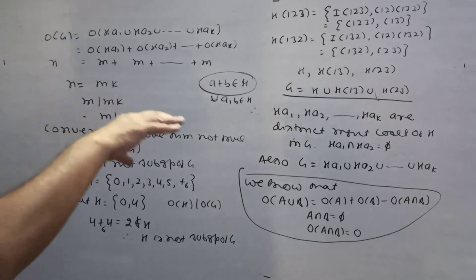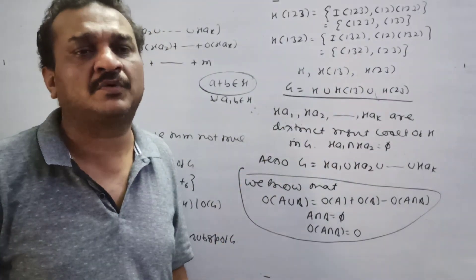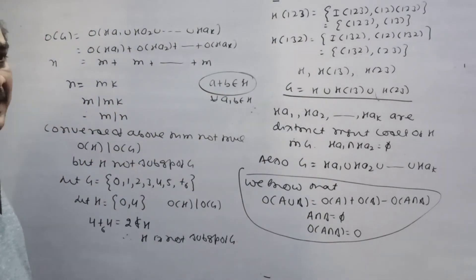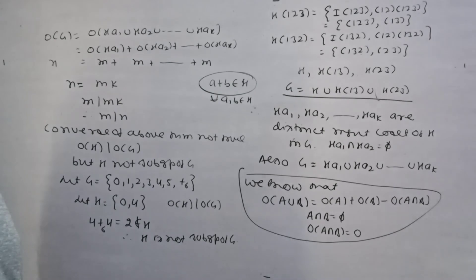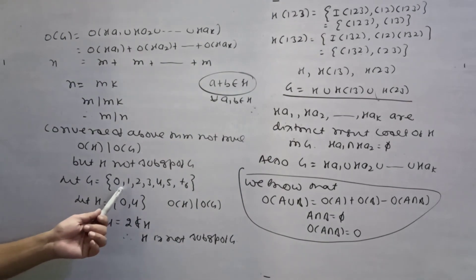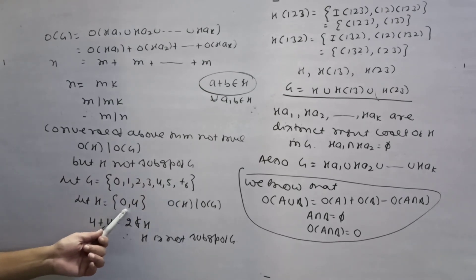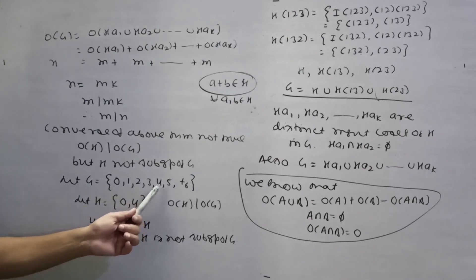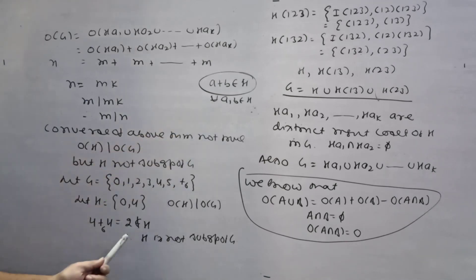So every subgroup of a finite group G has its order dividing the order of G. But the converse of Lagrange's theorem may not be true. Consider H = {0, 4} under addition modulo 6. The order of H is 2 and the order of G is 6, so order of H divides order of G. But the closure property fails, so H is not a subgroup.